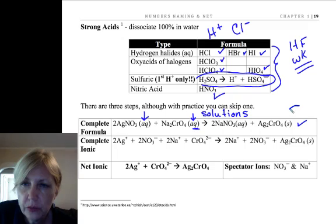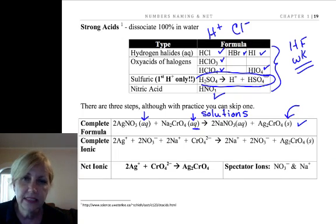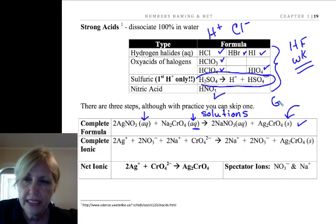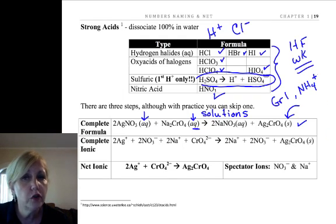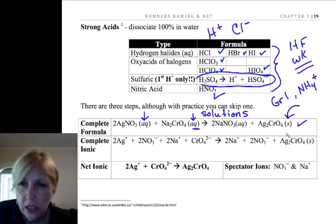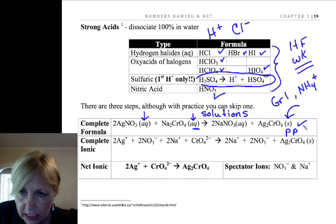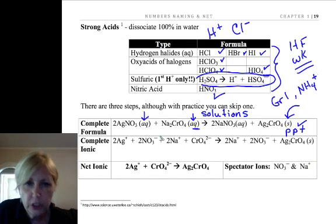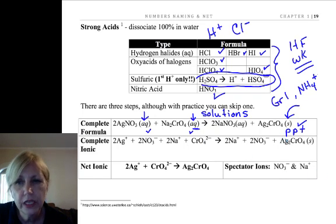Now, if you know your solubility rules, chromate wasn't listed as a soluble substance. The only chromates that would be soluble are group 1 and ammonium, because rule 1 says all group 1 and ammonium are soluble. So that's why we put a solid there, because it would form a solid, or another word for solid is precipitate. When two aqueous solutions are added together and a solid forms, we call that a precipitate.